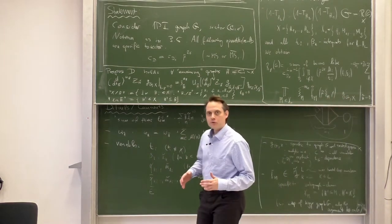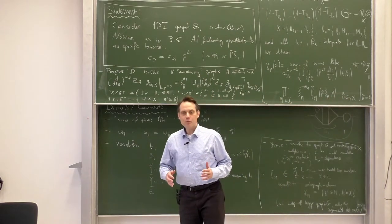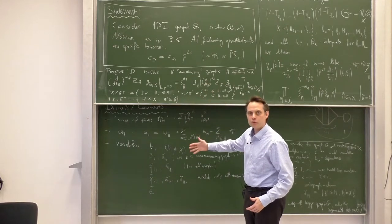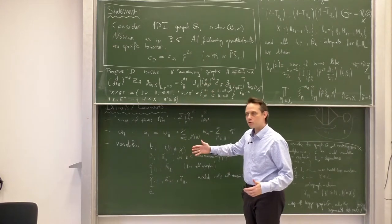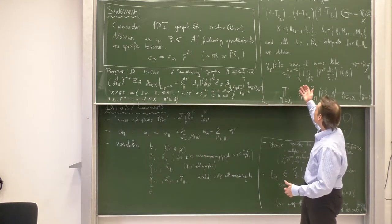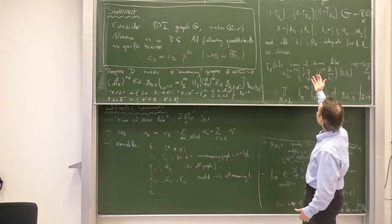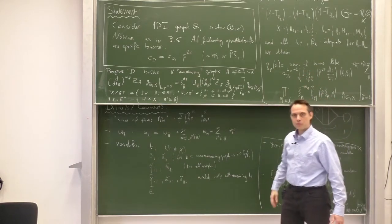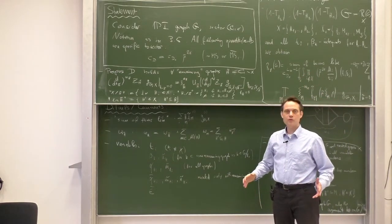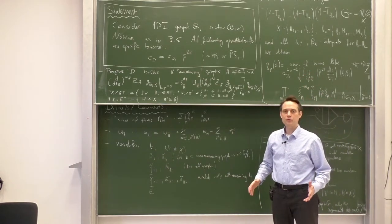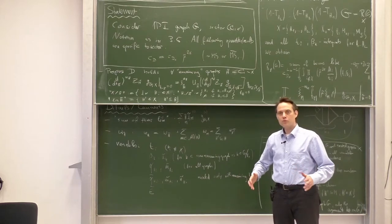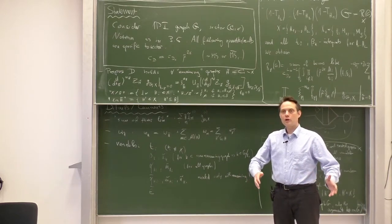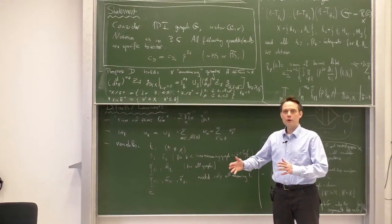The first step is the base step, which means we prove everything for L equals 0. L equals 0 is allowed in the statement, and this will be our base step. Then second, we need to do the induction step from L minus 1 to L.